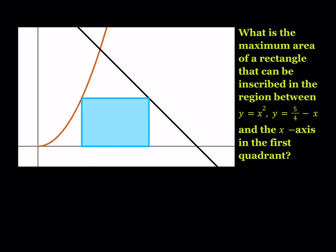Hello everyone. In this video we're going to be solving an optimization problem. Optimization problems are very important in calculus and they're not too hard if you understand the idea. We have a rectangle inscribed in the region between y equals x squared, y equals 5 fourths minus x, and the x-axis in the first quadrant, and we're trying to maximize the area of this rectangle. Let's go ahead and take a look.